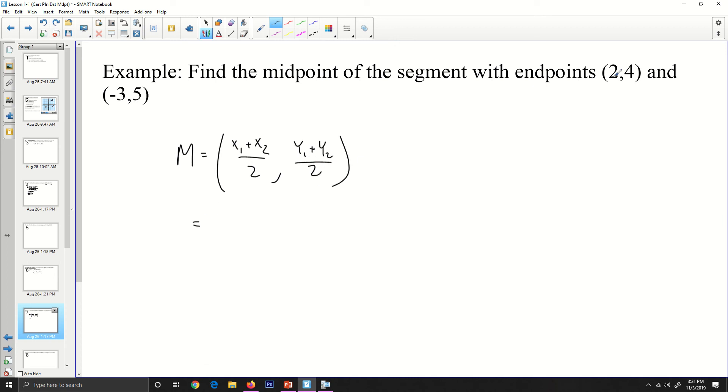And again, this point right here we'll call x1, y1, and this point right here x2, y2. And so, let's see here, the x's are 2 plus negative 3, all over 2. And then the y's were 4 plus 5, all over 2.